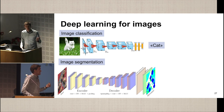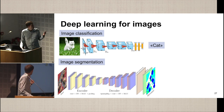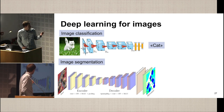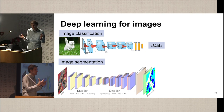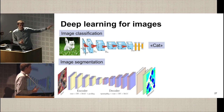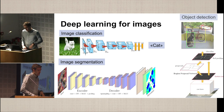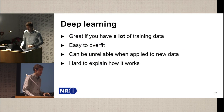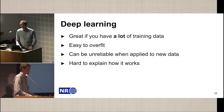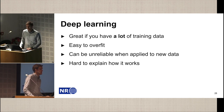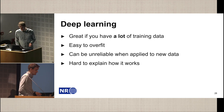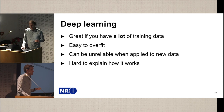We can use CNNs for classification, for image segmentation — where the input is an image and the output is an image with classes, which is what we'll use for the forest problem — or for object detection where the output is bounding boxes around objects. Deep learning is great if you have a lot of training data, but it comes with warnings. It's very easy to overfit, so the difference between training accuracy and test accuracy is often large, and we need to test it properly. It can also be unreliable when applied to new data.